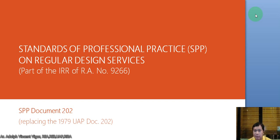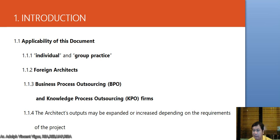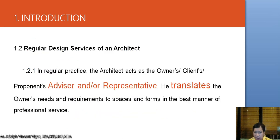Good day, class. These are the Standards of Professional Practice on Regular Design Services, which is part of the IRR of RA 9266, replacing the 1979 UAP Document 202. For the applicability of this document, it applies to individual practice, architects' BPO and TPO firms. The architect's outputs may be expanded or increased depending on the requirements of the project, since projects have different scope and difficulty.